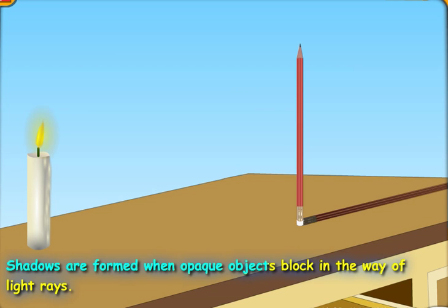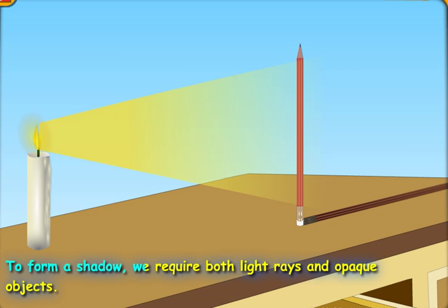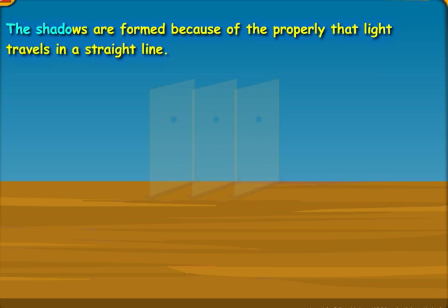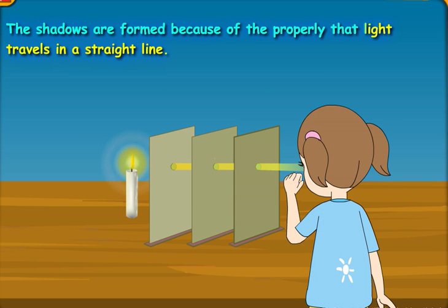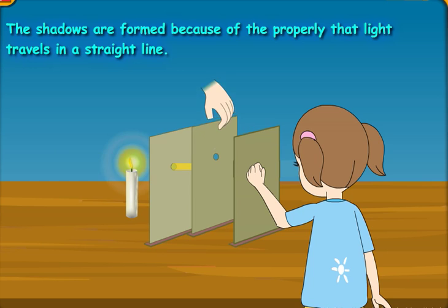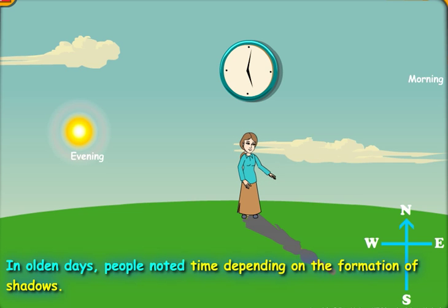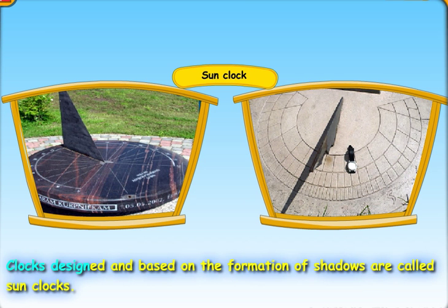Shadows are formed when opaque objects block the waves of light rays. To form a shadow, we require both light rays and opaque objects. Nature of shadow depends on the source of light and the distance between the object and light source. The shadows are formed because of the property that light travels in a straight line. Positions, direction, and length of the shadows keep changing throughout the day. In olden days, people noted time depending on the formation of shadows. Clocks designed based on the formation of shadows are called sun clocks.